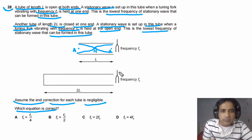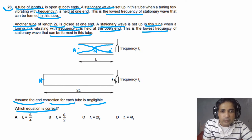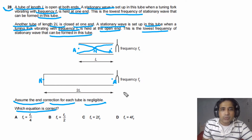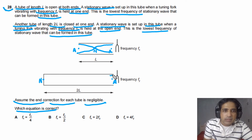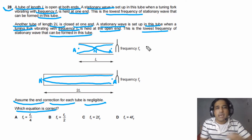We can also draw the stationary wave for the second pipe, which is open at one end and closed at the other. At the closed end we observe a node, and at the open end there is an antinode. The stationary wave inside this closed-open pipe looks like a quarter-wavelength shape.